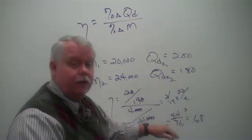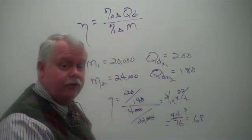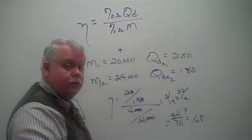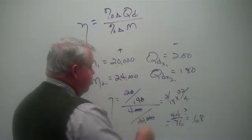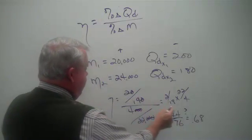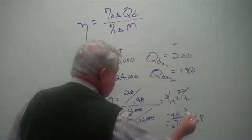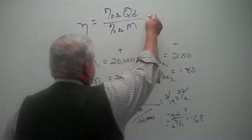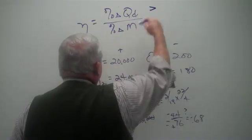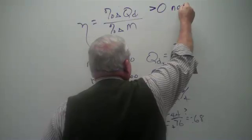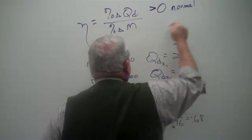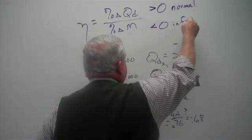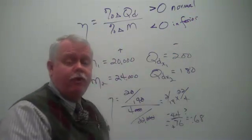But what we do want to particularly notice is what is the sign of this coefficient for the income elasticity? We saw an increase in incomes and a decrease in quantity. So we have a negative change over a positive change. The sign of the coefficient is negative. And so our general rule is when the income elasticity is greater than zero, we have a normal good. If it's less than zero, as we had here, negative, it's an inferior good.